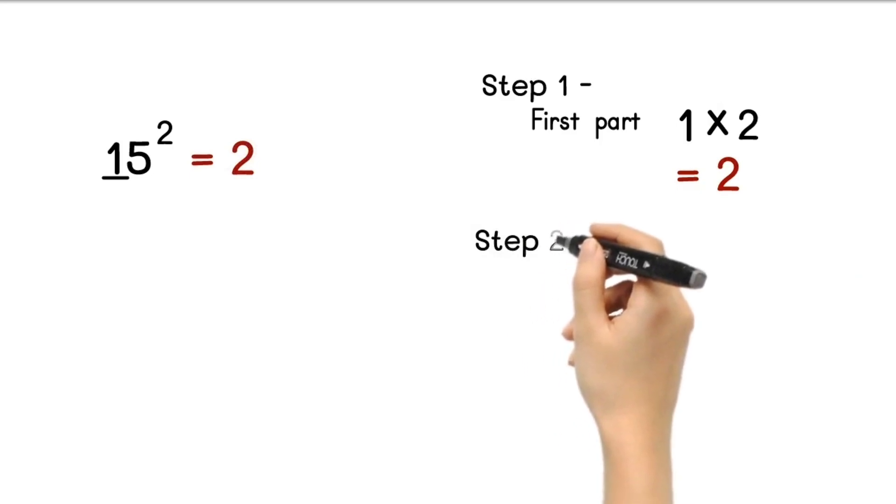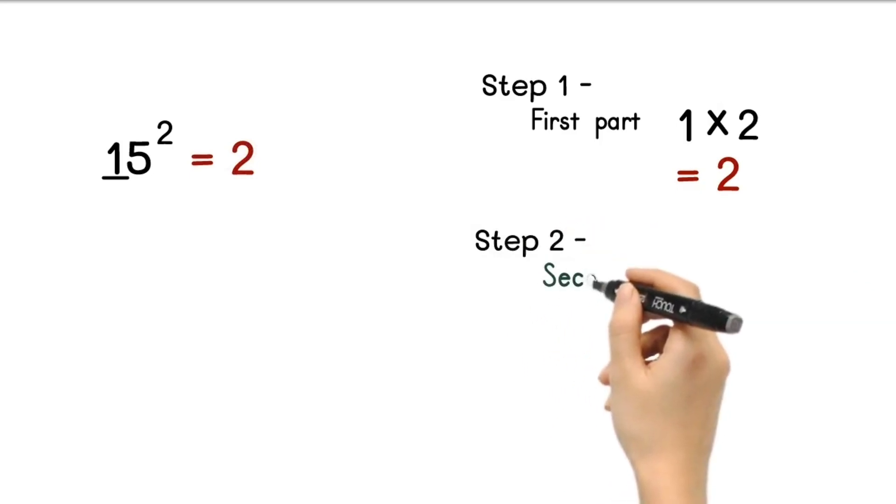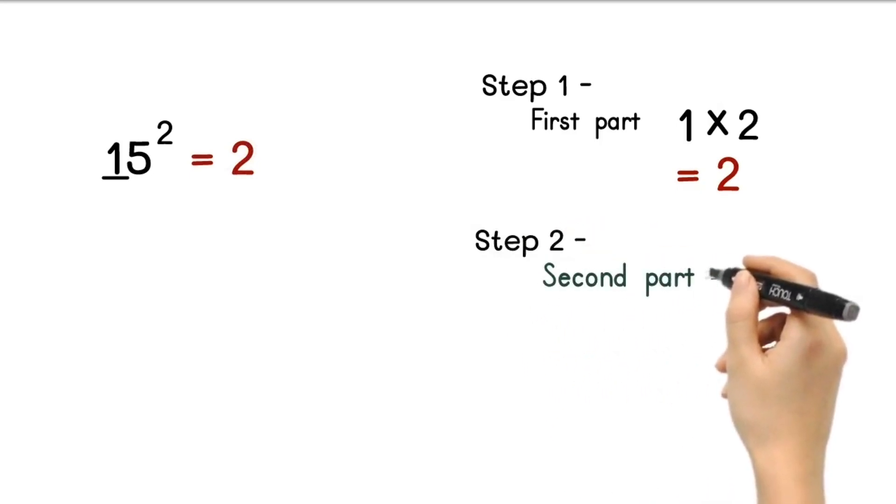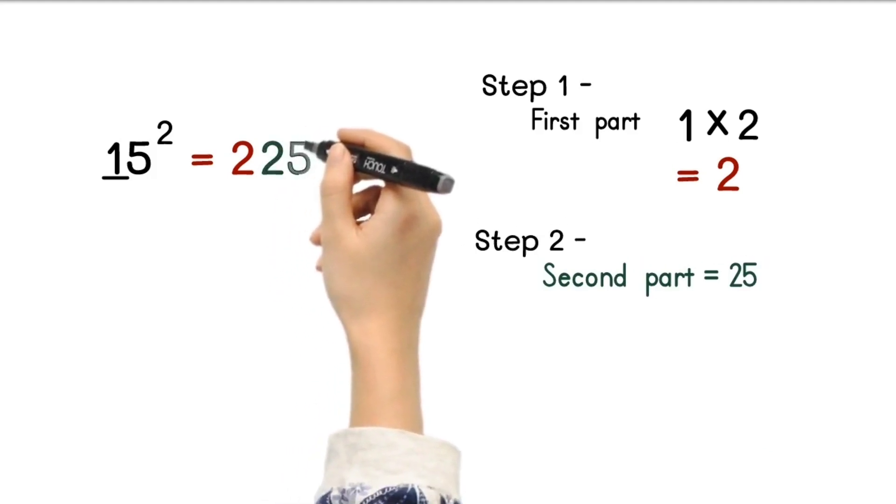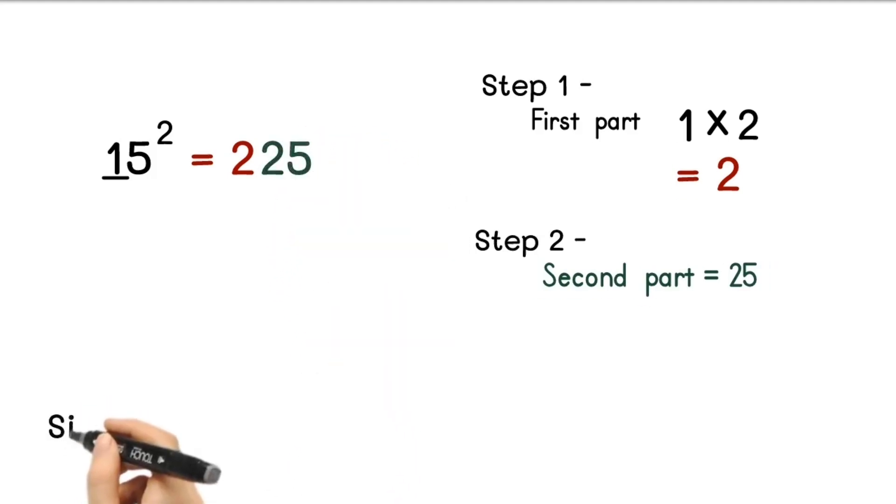Now let's move to the next step. In the next step, we need to find out the second part of it. So second part is always 25, it is 5 square. So the square of 15 will be 225.